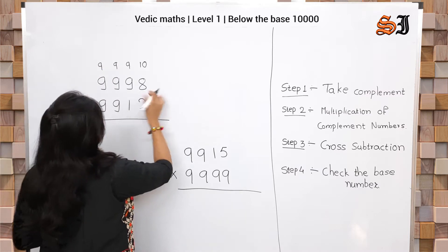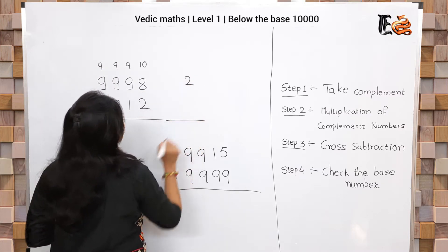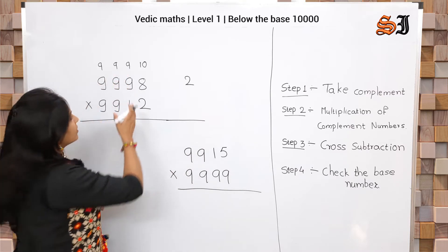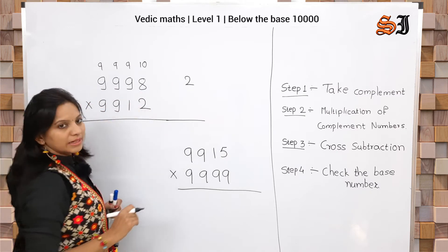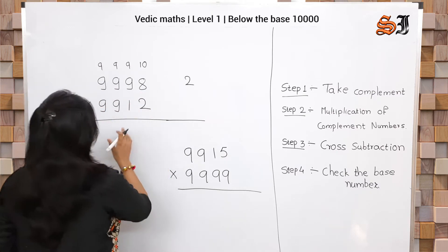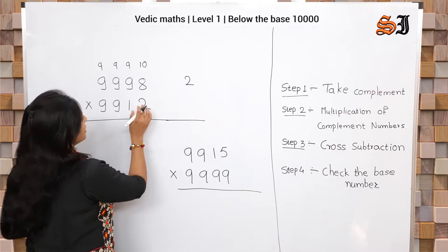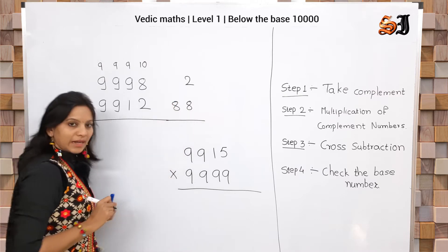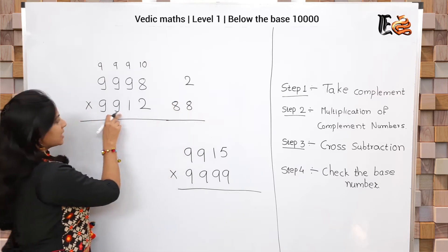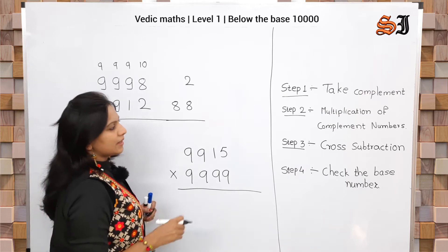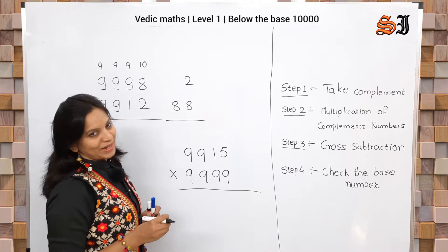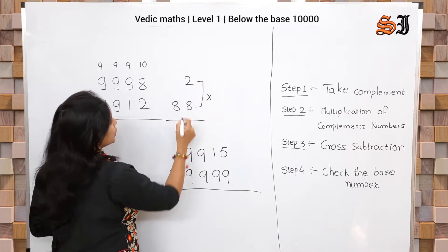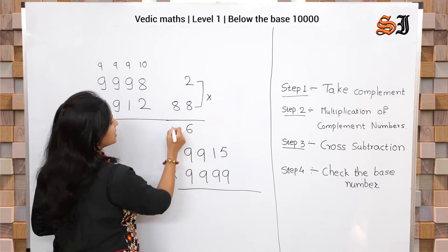So it is complemented. For 9998: 9 minus 9 is 0, 9 minus 9 is 0, 10 minus 2 is 8 — complement is 0002. For 9912: 9 minus 9 is 0, 9 minus 9 is 0, 9 minus 1 is 8, 10 minus 2 is 8 — complement is 0088. Next step: multiplication of the complement numbers.